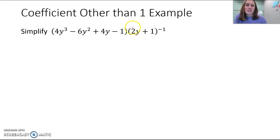So in this case, our coefficient for our variable term is 2. So we would have to divide everything by 2. And if we divide our denominator, because that has a negative 1 power, if we divide our denominator by 2, we'd have to divide our numerator by 2.